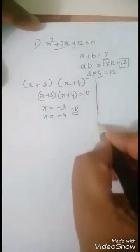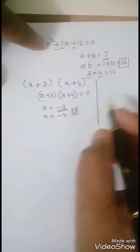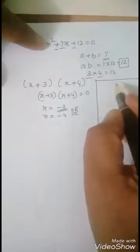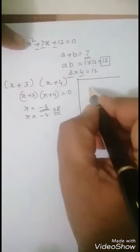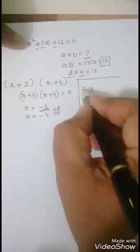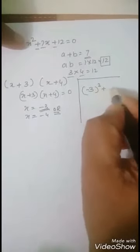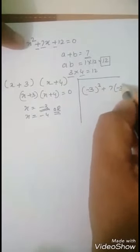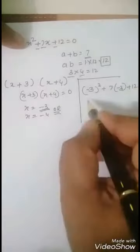Substitute -3 in x. That is x² which is (-3)² + 7(-3) + 12 = 0.